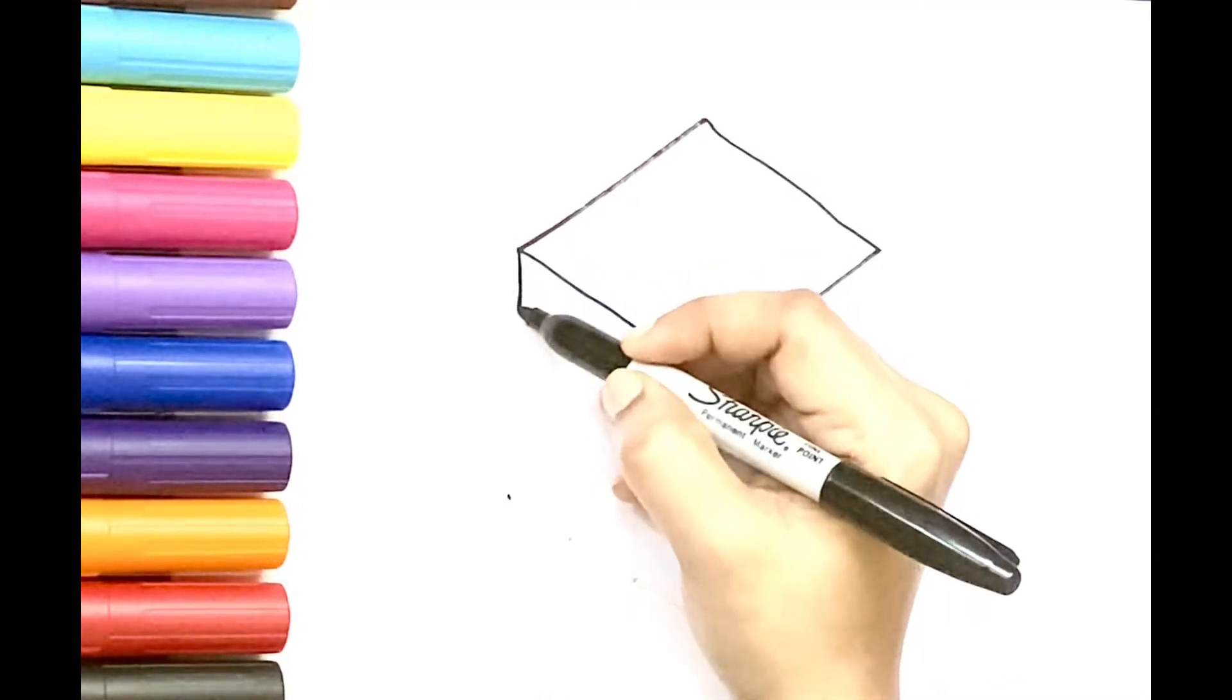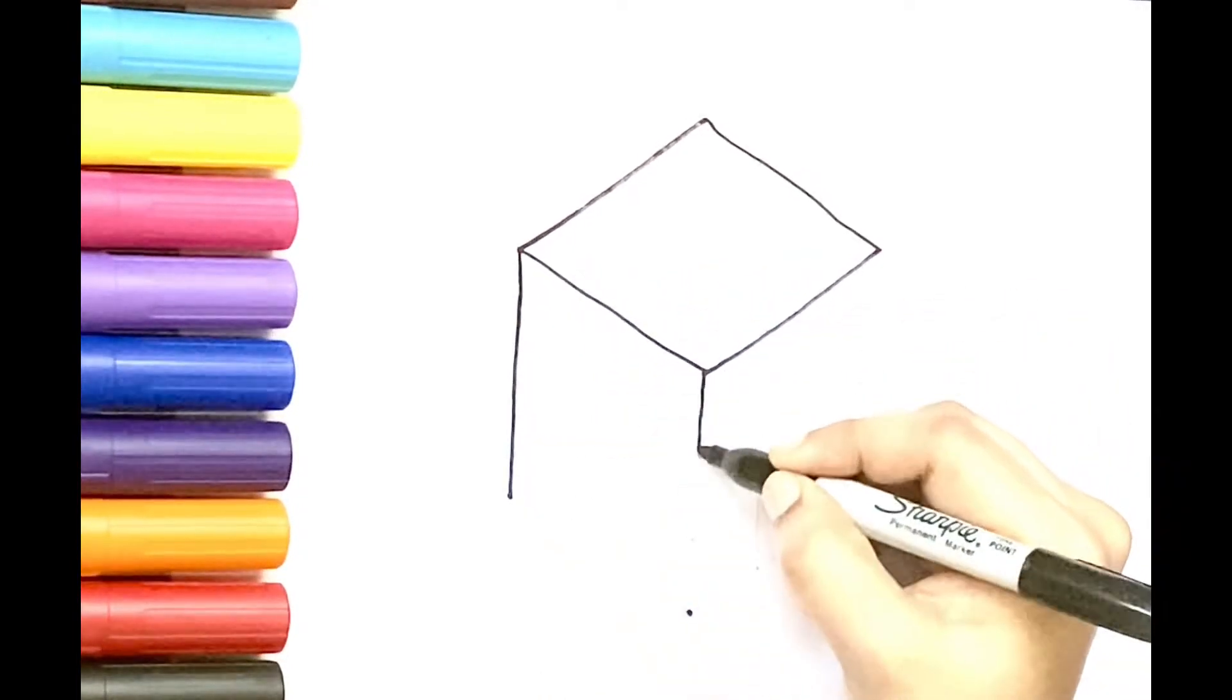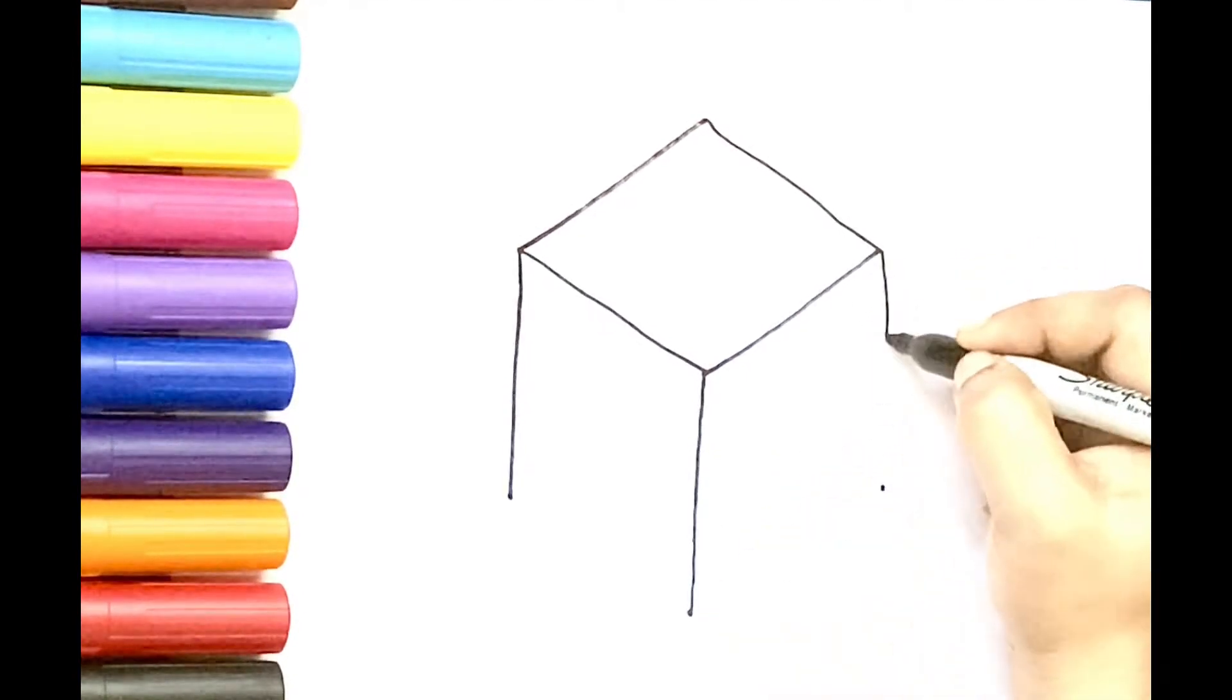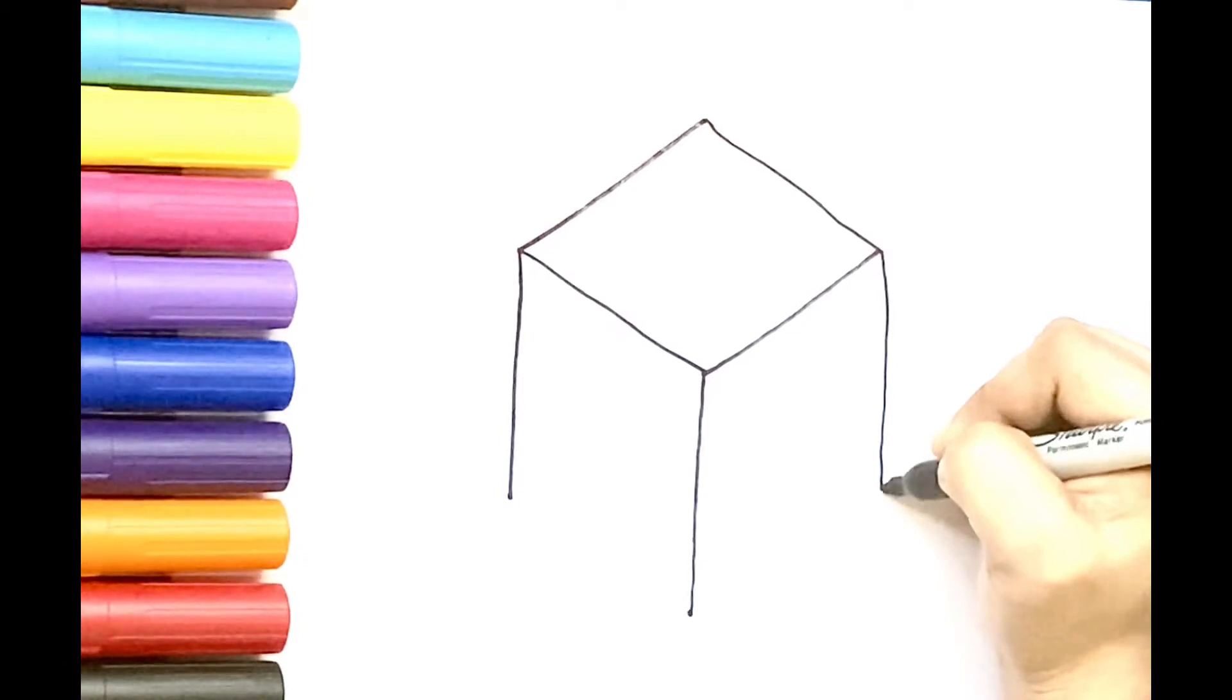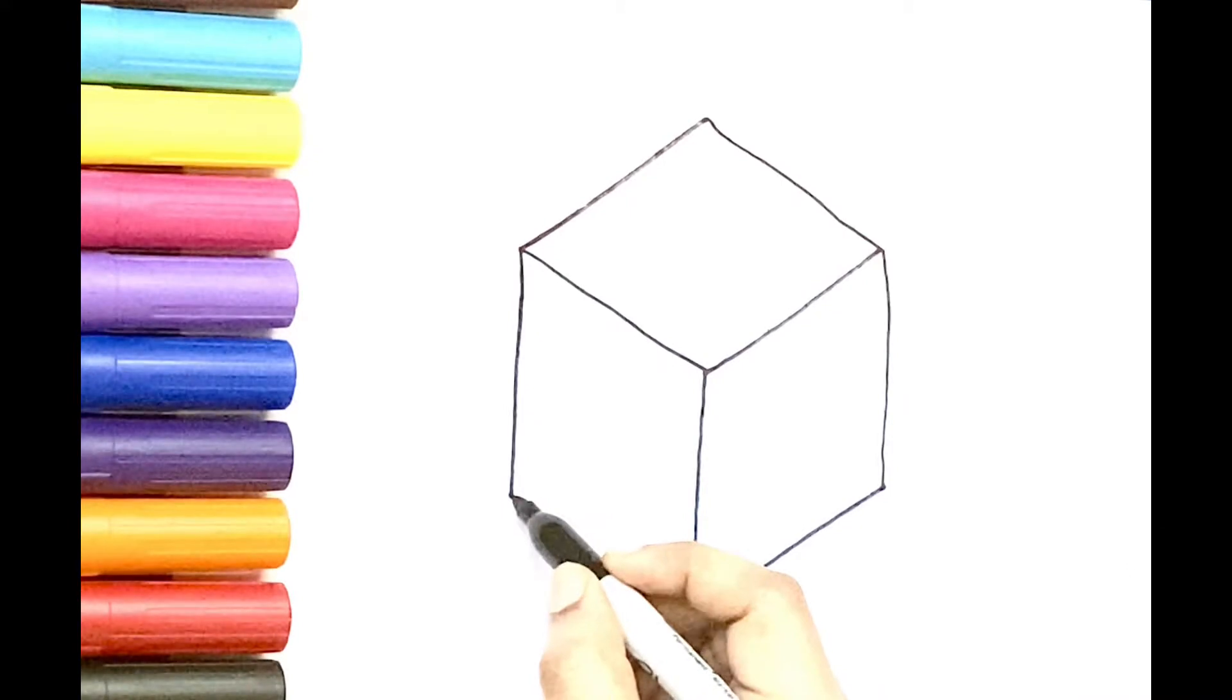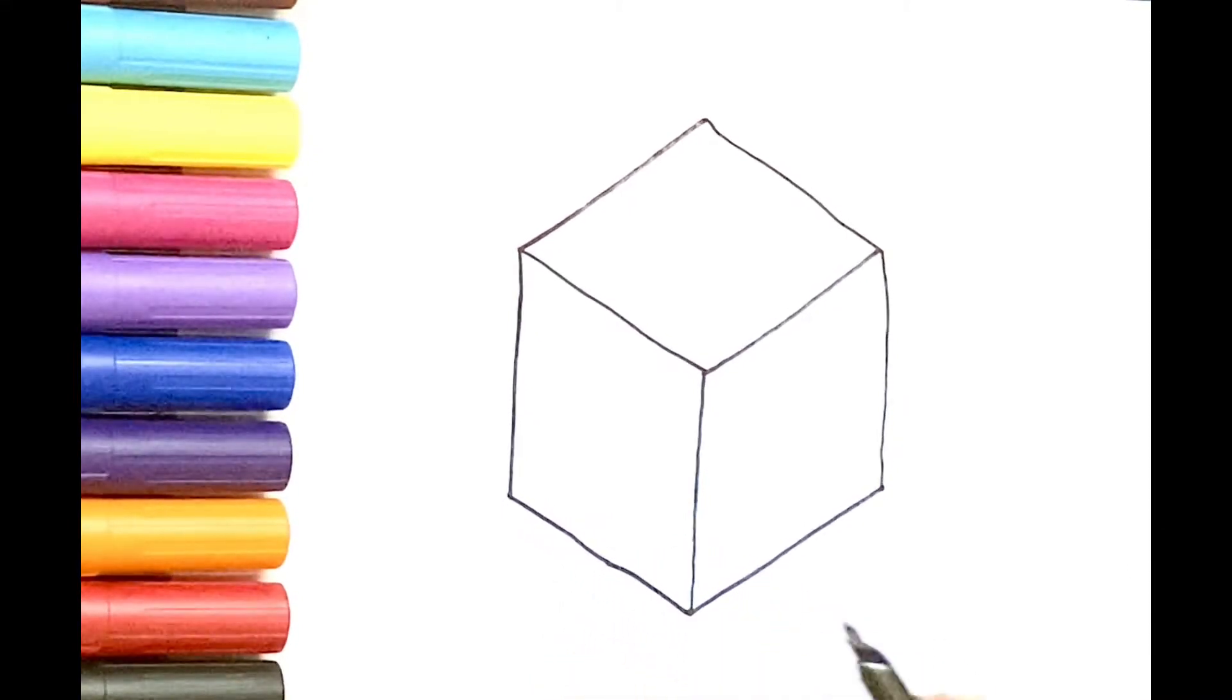Now from the first corner draw a standing line. Repeat the same for the second and third corner. Now join the first standing line with the second standing line. Next join the second standing line with the third standing line.